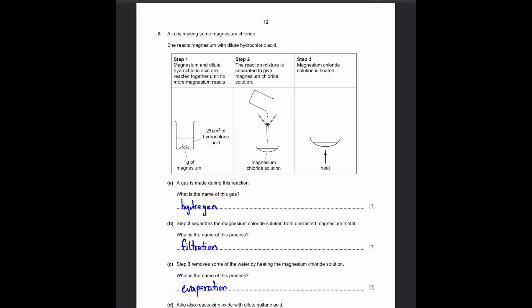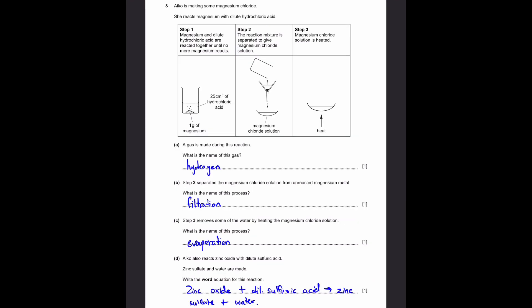Part C, Step 3: Remove some of the water by heating the magnesium chloride solution. What's the name of this process? It's quite simple. We're removing the water. That's just evaporation. Because we're heating it, we're removing the water, and that will be our answer. Part D: Iko also reacts zinc oxide with dilute sulfuric acid. Zinc sulfate and water are made. Write the word equation for this reaction. So we have the reactants and we have the products. We just write the reactants here: zinc oxide plus dilute sulfuric acid. By the way, you can write dilute as DIL, it's just a short form. And then zinc sulfate plus water, which are the products.